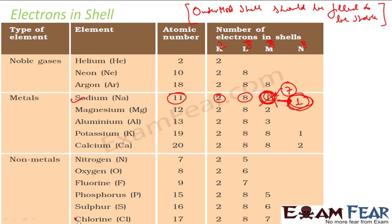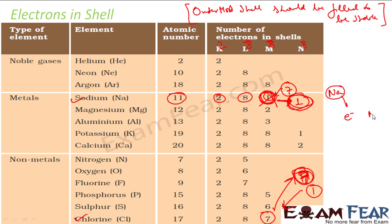If you see chlorine, it has 7 electrons in the outermost shell. So it has two options: either give 7 electrons to someone or gain 1 electron from someone. Chlorine will not like to give 7 because it is almost done — it just needs 1 more electron to complete its outermost shell. So it will try to get 1 electron from somewhere. The moment sodium comes and is ready to give 1 electron, sodium becomes Na+ and chlorine takes this electron and becomes Cl-.